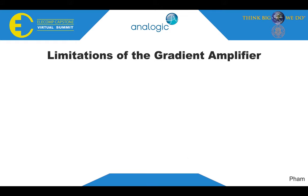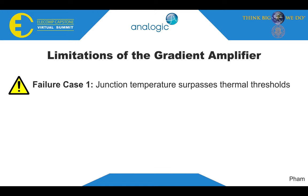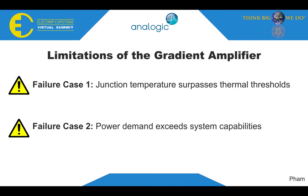There are two such limitations of the gradient amplifier which we are concerned with. The first is when junction temperatures surpass the thermal thresholds. This can occur if the input control waveform requires excessive current and the cold plates cannot mitigate the rise in temperature. The other case is when the power demand exceeds what the capacitor banks and power supply can provide, resulting in output waveform distortion and skewed MRI results. In both cases, the outcome can have detrimental effects on the test and disturb the patient.